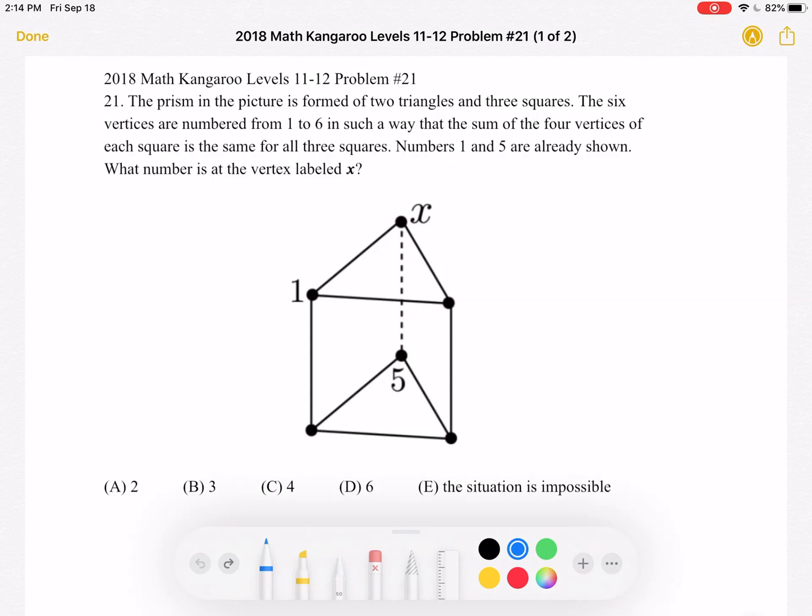The answer choices are: a) 2, b) 3, c) 4, d) 6, or e) The situation is impossible.